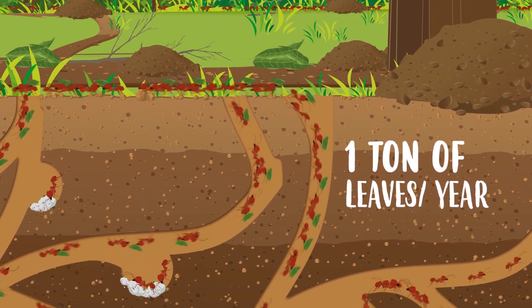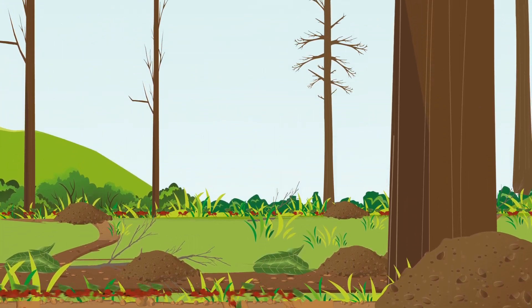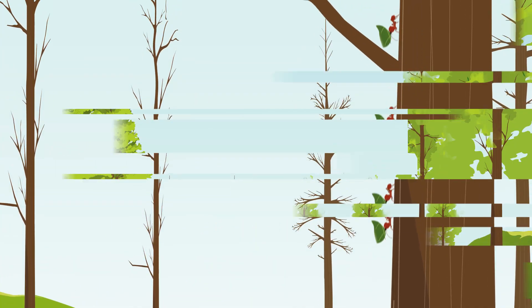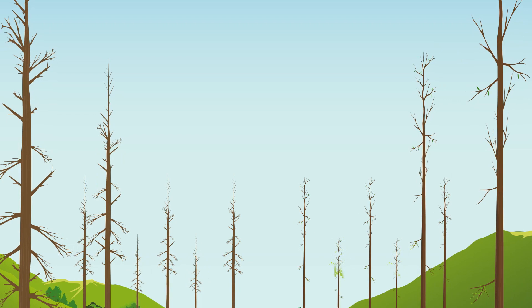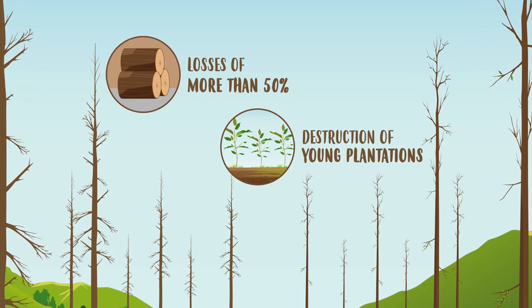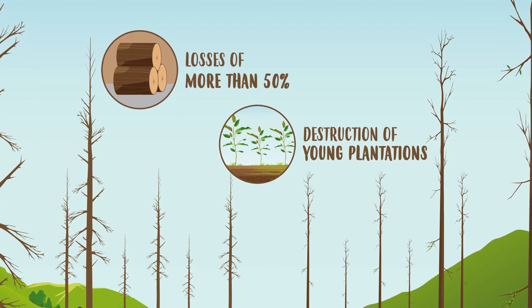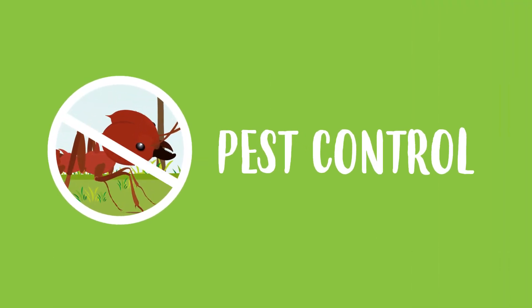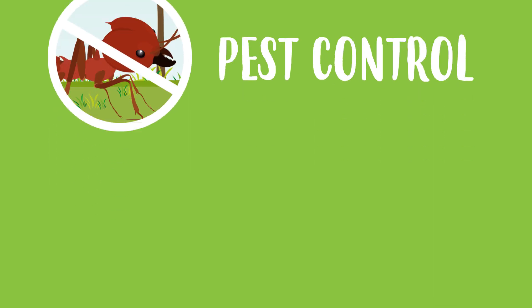Without their leaves, trees cannot perform photosynthesis and do not grow. Leafcutter ants can reduce wood production by more than 50%, or even completely destroy young plantations within a short period of time. This is why it's so important and necessary to control these pests.